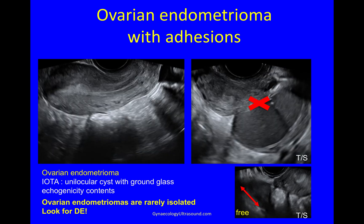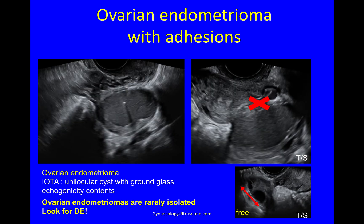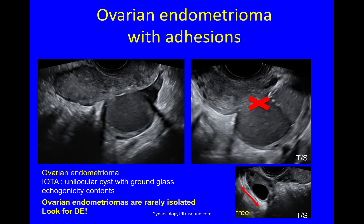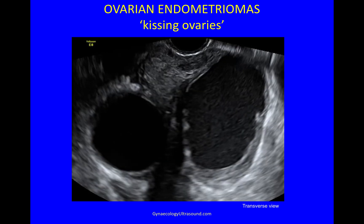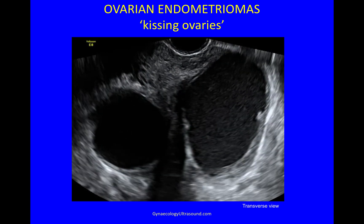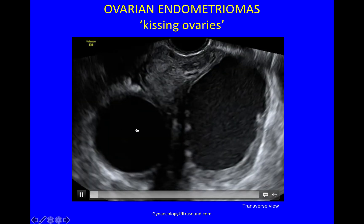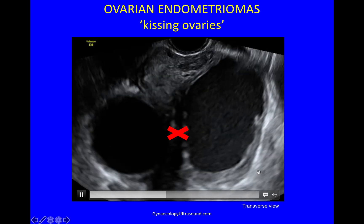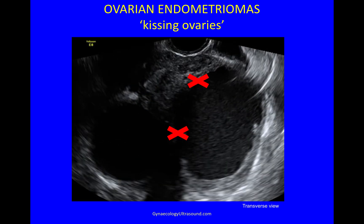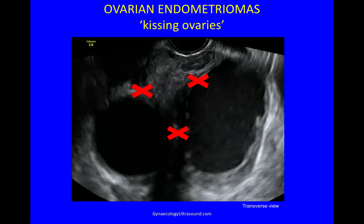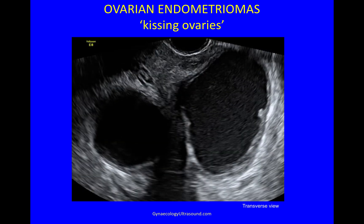Ovarian endometriomas are rarely isolated, so you also need to look for deep endometriosis. But when you're in the transverse plane, you can even here just see that these ovaries are adherent to each other. These are kissing ovaries with bilateral endometriomas, and they're adherent to the back of the cervix as well.